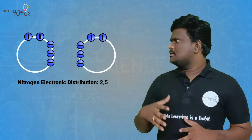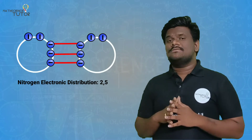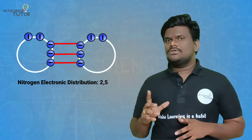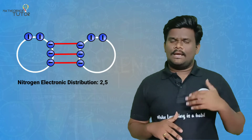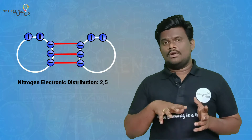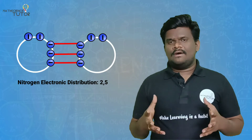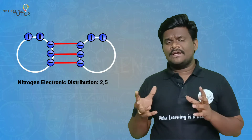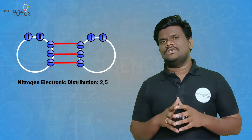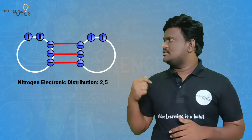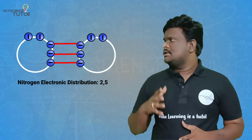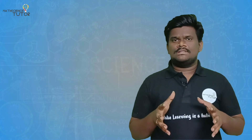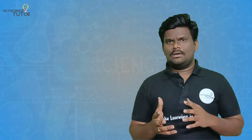Coming to nitrogen — nitrogen atoms form N2 with a triple bond. Nitrogen atoms have five electrons in the outermost shell. Both nitrogen atoms have five valence electrons, and these five valence electrons are shared so that they achieve octet stability.